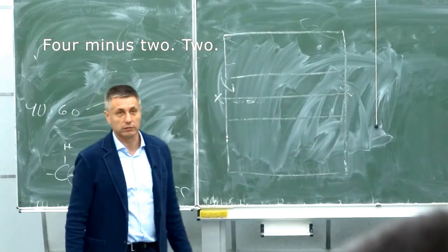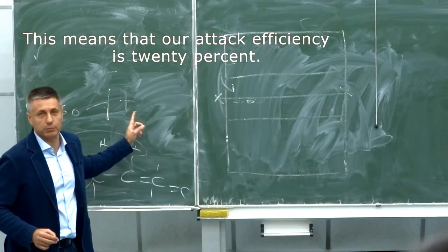4 minus 2, what is it? 2. 2 out of 10, how much? 20%. That means that the effectiveness of the attack is 20%. But 20% at the high level of the top — the effectiveness is not too bad.